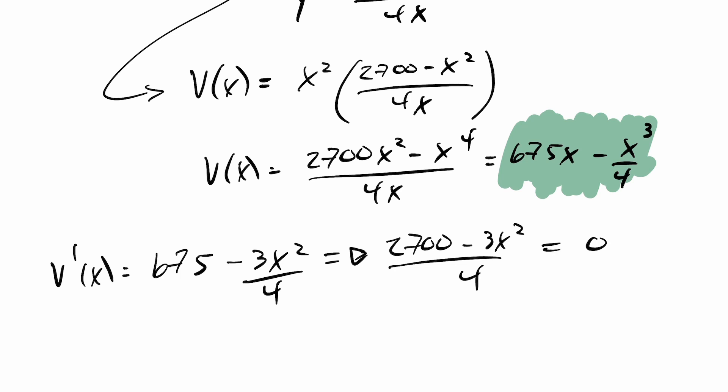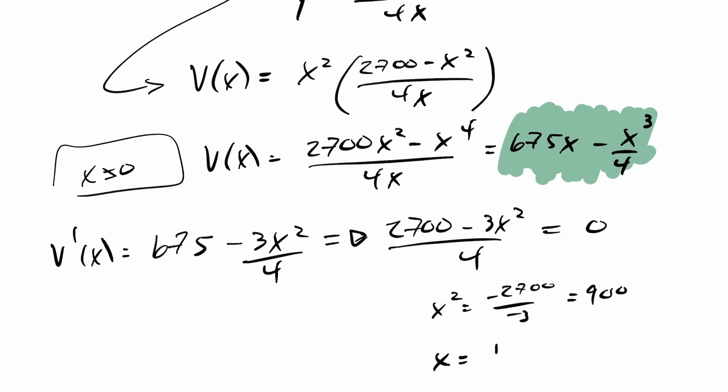You can see here that just one assumption we have already is X cannot equal 0. This is outside of the domain of my function. But I do have this condition right here. So when is my first derivative 0? First derivative is 0. It's not undefined anywhere. My first derivative is going to be 0 when X squared equals negative 2,700 over negative 3, which if I simplify this, we get 900. Therefore, X is going to equal plus or minus 30.